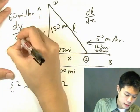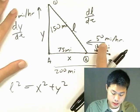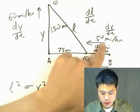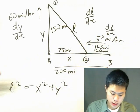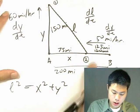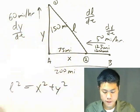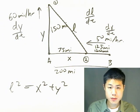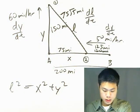We know dY/dt is 60 miles per hour. And dX/dt — not quite positive 50, it's actually going to be negative 50 miles per hour, and I'll explain why shortly. It will also be helpful to know the actual distance L, so let's calculate it: 50 squared plus 75 squared, take the square root, and that comes out to be 75 times root 5 miles.